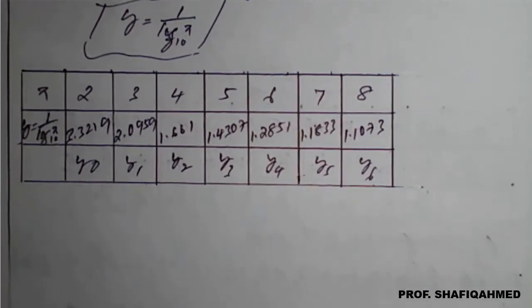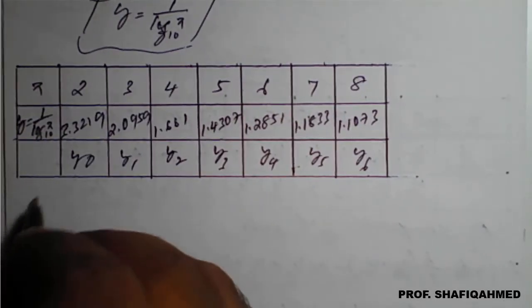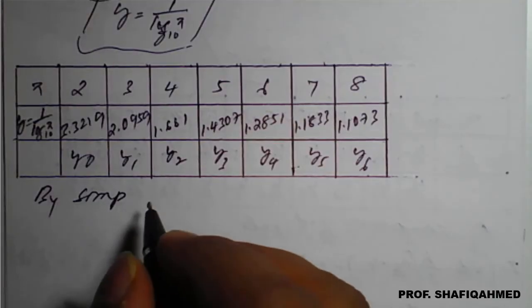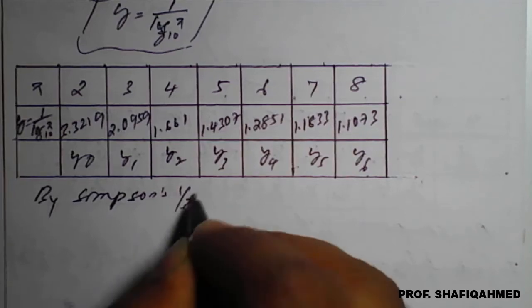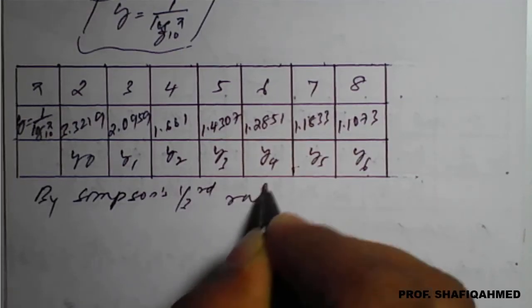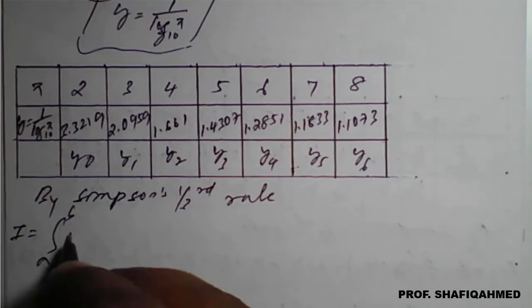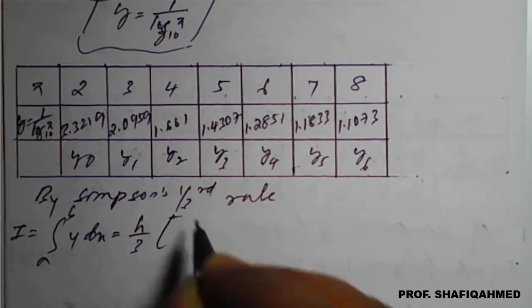Once we get these values, we will go for Simpson's one third rule now. By Simpson's one third rule, I equals the integration from a to b of y dx, which equals h upon 3 times bracket: